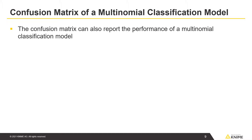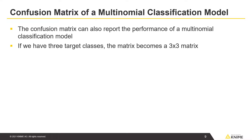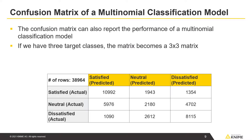For example, if we have three target classes, the matrix becomes a 3x3 matrix. Here, you see a confusion matrix for another classification model predicting customer satisfaction. This time, however, the target column satisfaction has three classes: satisfied, dissatisfied, and neutral.